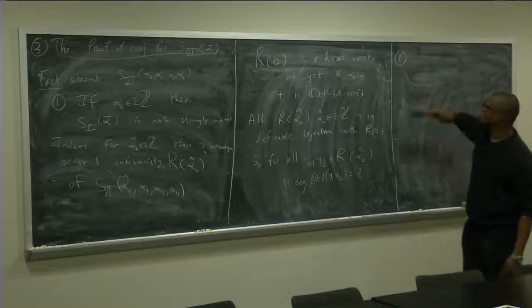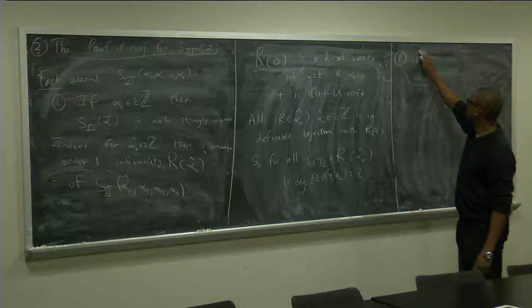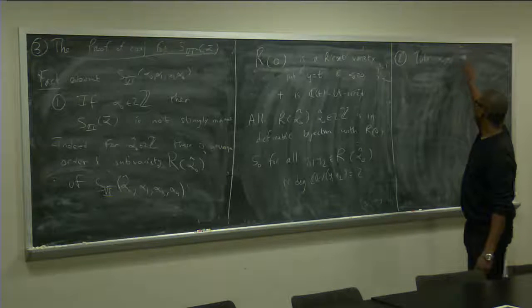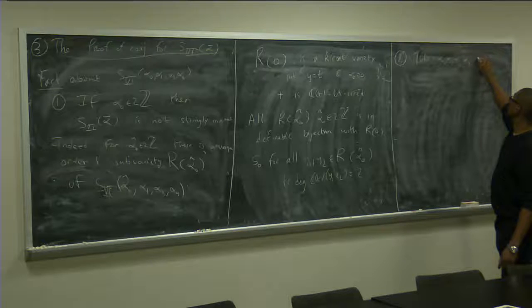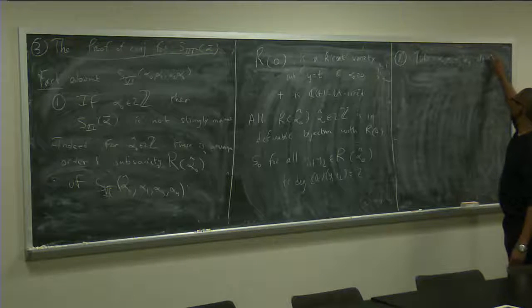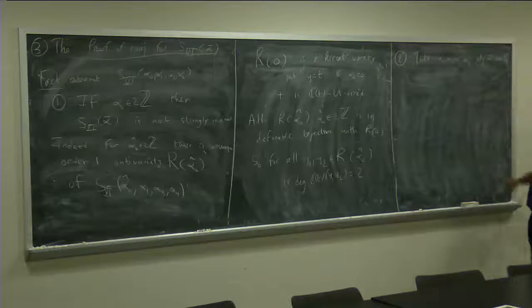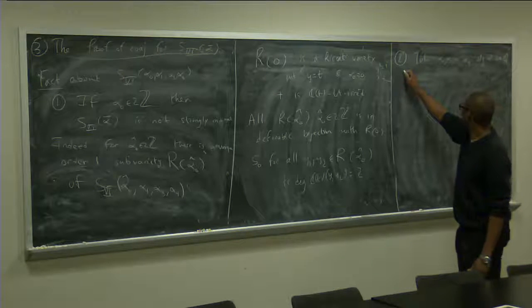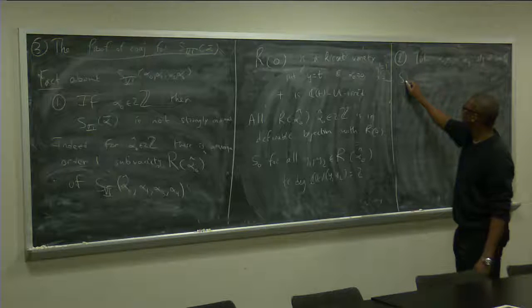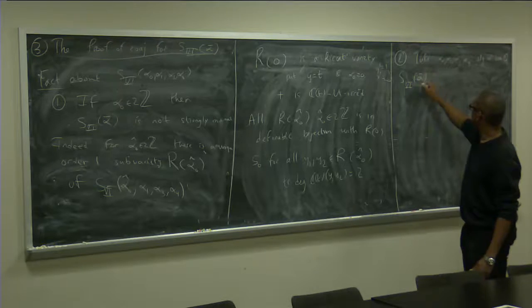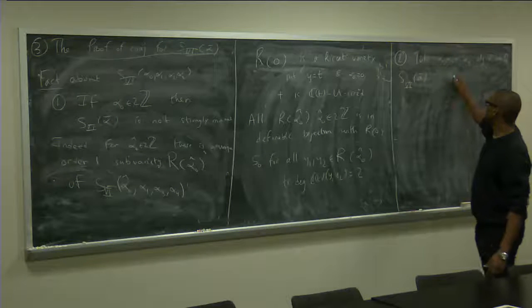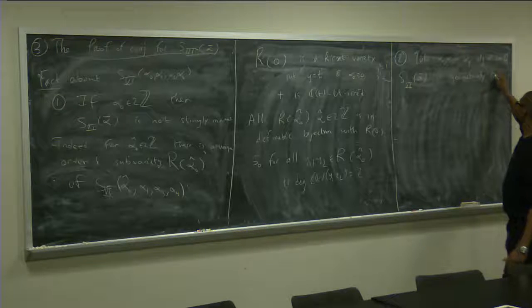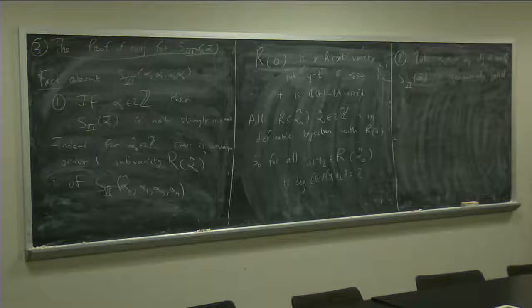Second fact is take, so for take alpha node, alpha 1, alpha 3, alpha 4, algebraically independent over Q. So, if you, right, then you have an S6 alpha. This alpha is geometrically trivial.